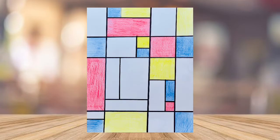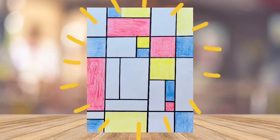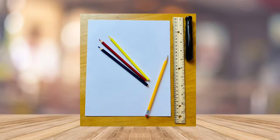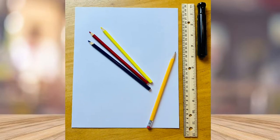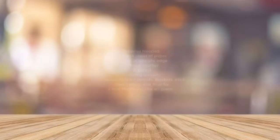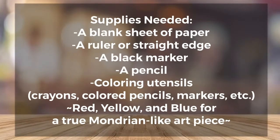Now that you can see how Mondrian was influenced by these Fibonacci rectangles, you are going to make your very own Mondrian style artwork. Before we get started, let's go over what you'll be needing. You will need any kind of blank paper, a pencil, a black marker, a ruler — or if you don't have a ruler, something with a straight flat edge — and a couple of writing utensils such as markers, colored pencils, or crayons.